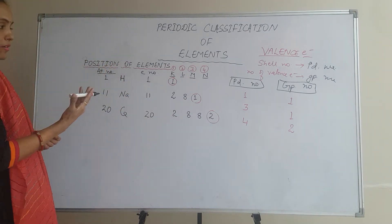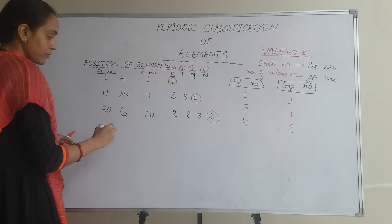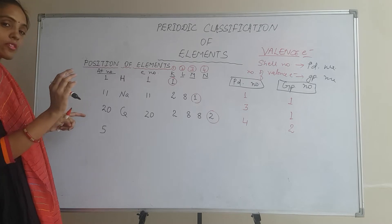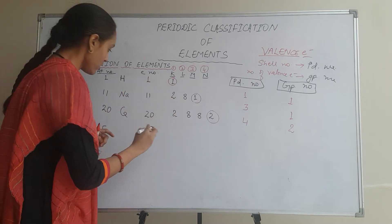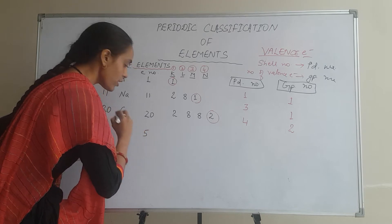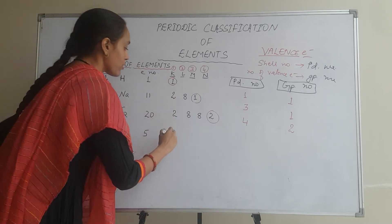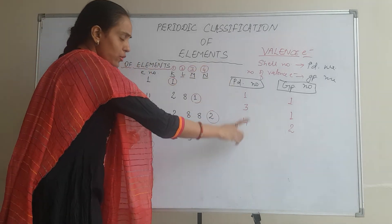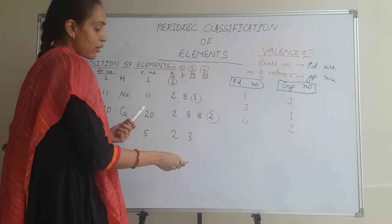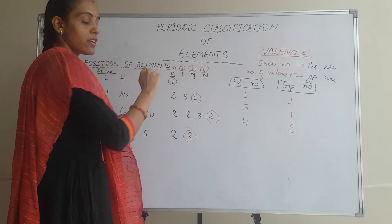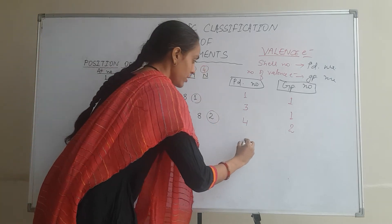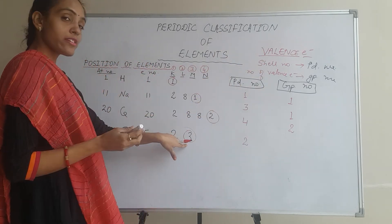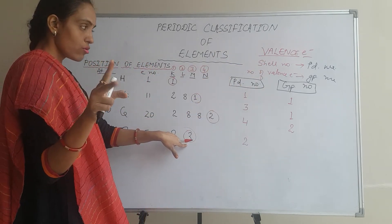One more example. Suppose I choose the 5th element: Hydrogen, Helium, Lithium, Beryllium, Boron — so Boron is the fifth element. Electrons will also be 5, and the electronic configuration is 2, 3. You can easily tell the period number: the valence electron is in the second shell, so period number will be 2. What about the group number? How many valence electrons? 3. So group number will be 3?